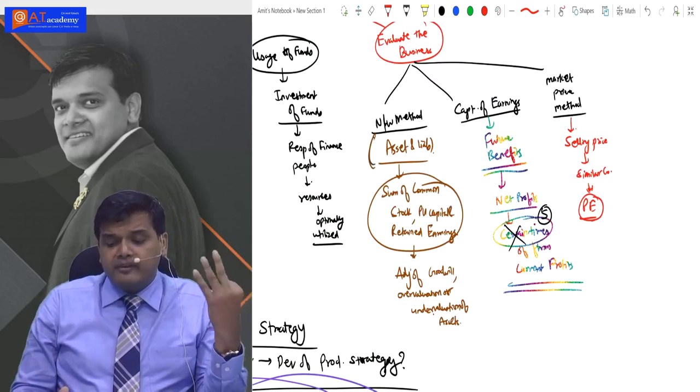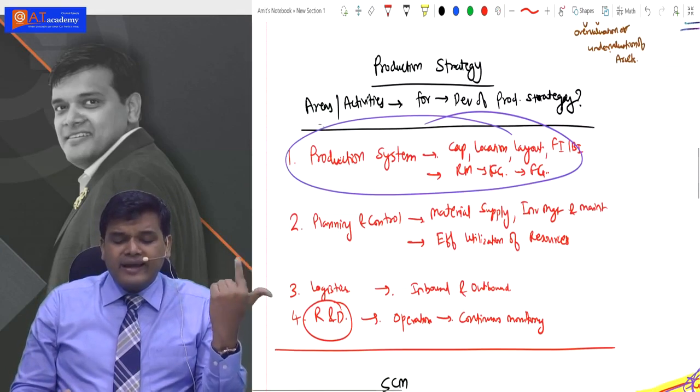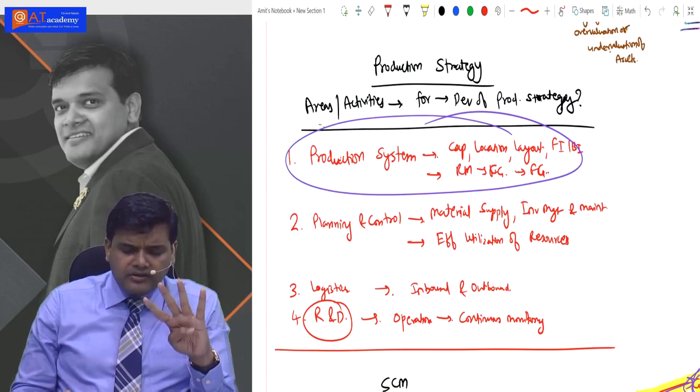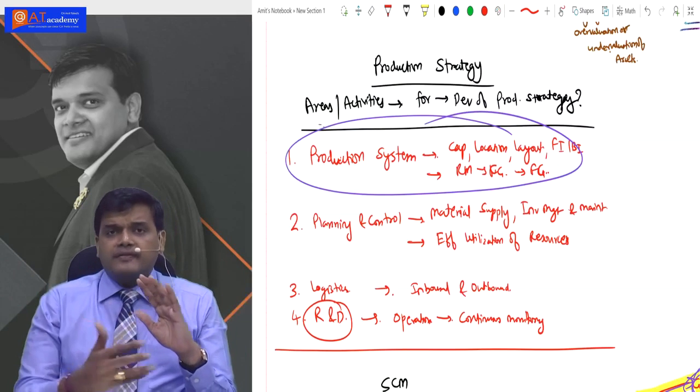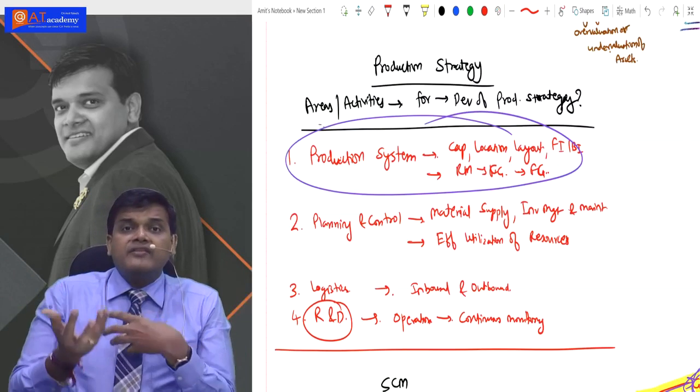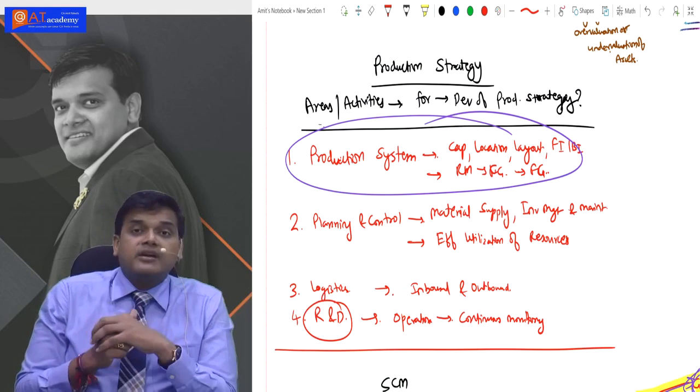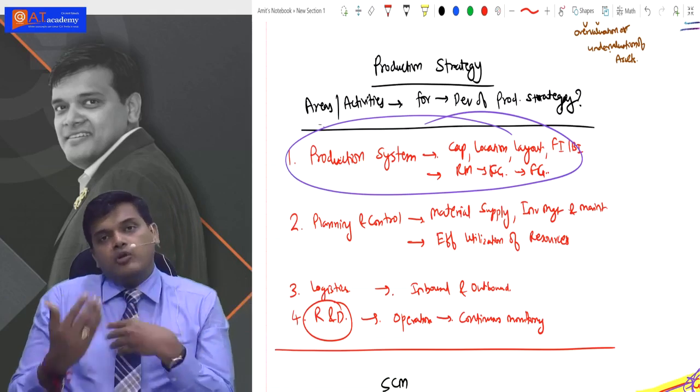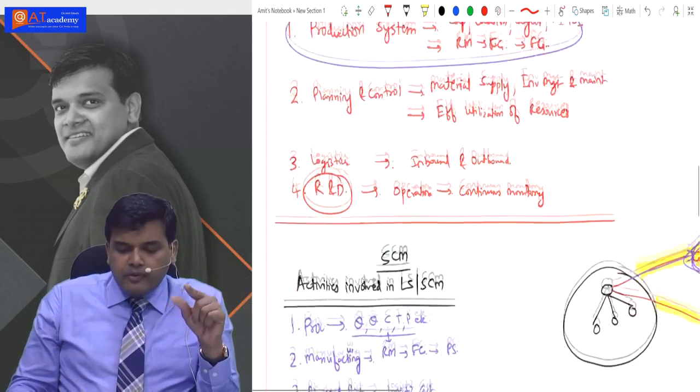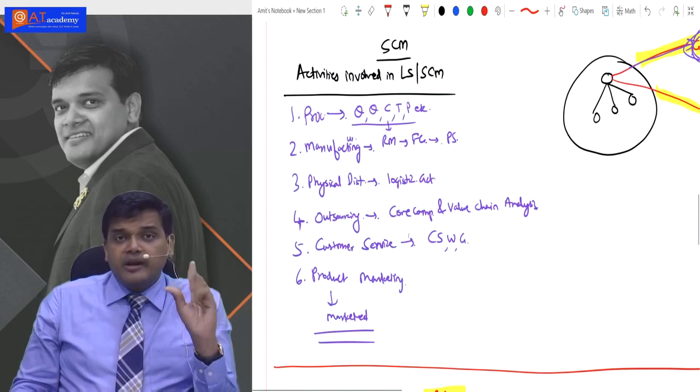After that, we saw production strategy - what areas or activities are there. We studied four things: first, what is the production system - how to do planning and control, including inventory management; third, how to manage logistics, both outbound and inbound; and fourth, how we focus on R&D. After this, I explained supply chain management.